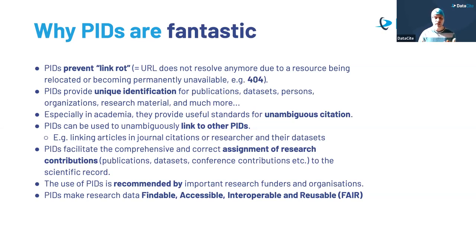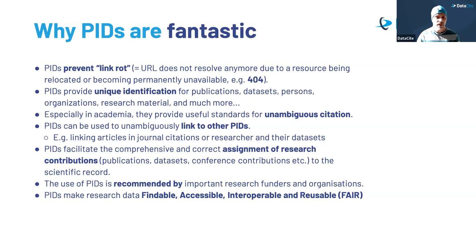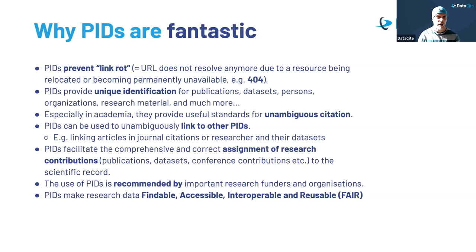PIDs provide unique identification for publications, datasets, people, and organizations — even for projects and conferences — so that these things can be persistently and uniquely identified, since there needs to be disambiguation in all these aspects. Unambiguous citation is really important because you need to be properly cited and credited for the research you're doing. This really makes an impact on your career or the career of your researchers.